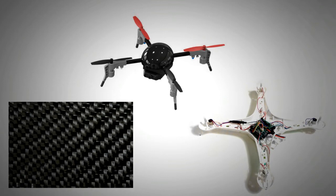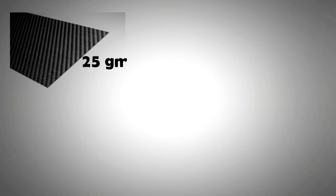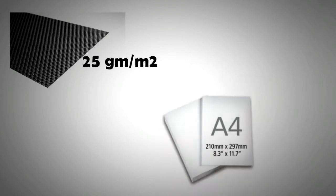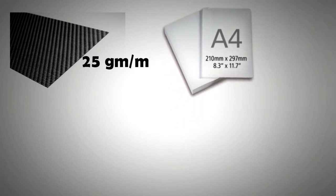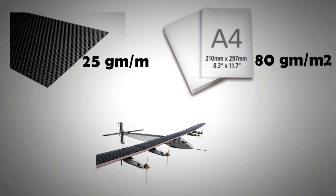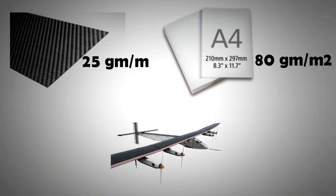To put things into perspective, carbon fiber composites available today weigh only 25 grams per meter square and can be used for making wings — lighter than A4 printer paper, which weighs 80 grams per meter square. For this reason, carbon fiber composites have been used in Solar Impulse 2, the solar-only powered aircraft.